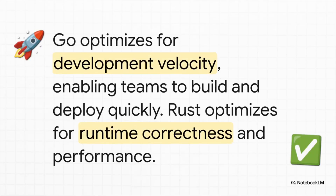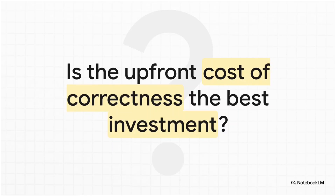Rust and Go aren't really enemies — they're more like two different tools in the toolbox, specialized for different jobs. Go is all about optimizing for speed of development: how fast can we build and ship this? While Rust is all about optimizing for runtime correctness: how can we make this thing as bulletproof and efficient as humanly possible? In a world where the risks of software failing are getting bigger every single day, you have to ask yourself: is paying that steep upfront cost for correctness — the kind Rust demands — actually the smartest investment you can possibly make?